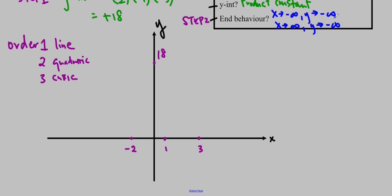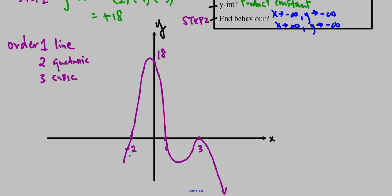I'm going to start from negative infinity and go through negative 2 like a line because the order is 1. Then I go up toward 18 — you want it to be symmetrical, so the maximum would probably be above 18. I come back down through 1 with order 1, then back up to 3 where the order is 2, so I approach it in a curvy parabolic manner right at 3. Extend the graph down and connect the dots in a curvy, attractive manner.